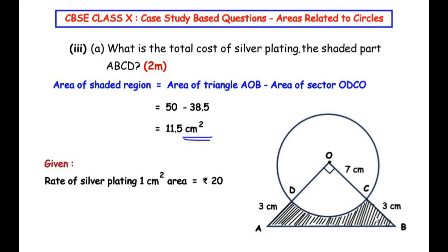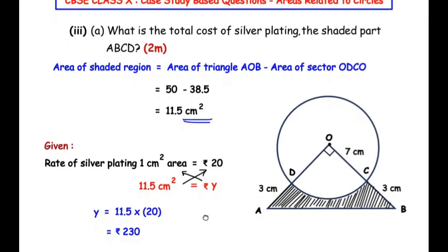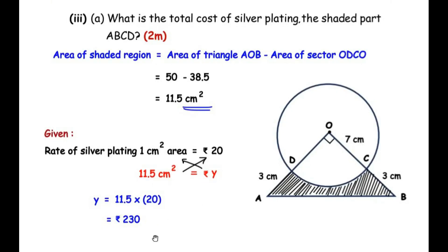Now we need to find the total cost of silver plating the shaded region. The rate given is rupees 20 per centimeter square, meaning 1 cm² costs rupees 20. For 11.5 cm², using cross multiplication: cost = 11.5 × 20 = rupees 230. So the total cost to silver plate the base ABCD is rupees 230.